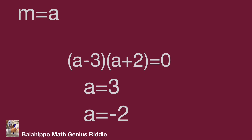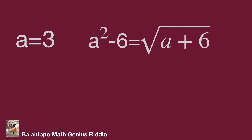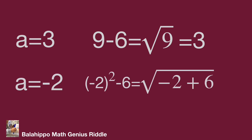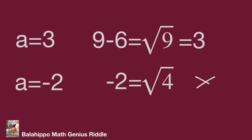We need to check both values in the original equation. When a equals 3: 3 squared minus 6 equals the square root of 3 plus 6, giving 9 minus 6 equals square root of 9, which is 3 equals 3. So a equals 3 is the correct answer. When a equals negative 2: quantity negative 2 squared minus 6 equals 4 minus 6 equals negative 2, but the square root of negative 2 plus 6 equals square root of 4 equals 2. These are not equal, so a equals negative 2 is not correct.